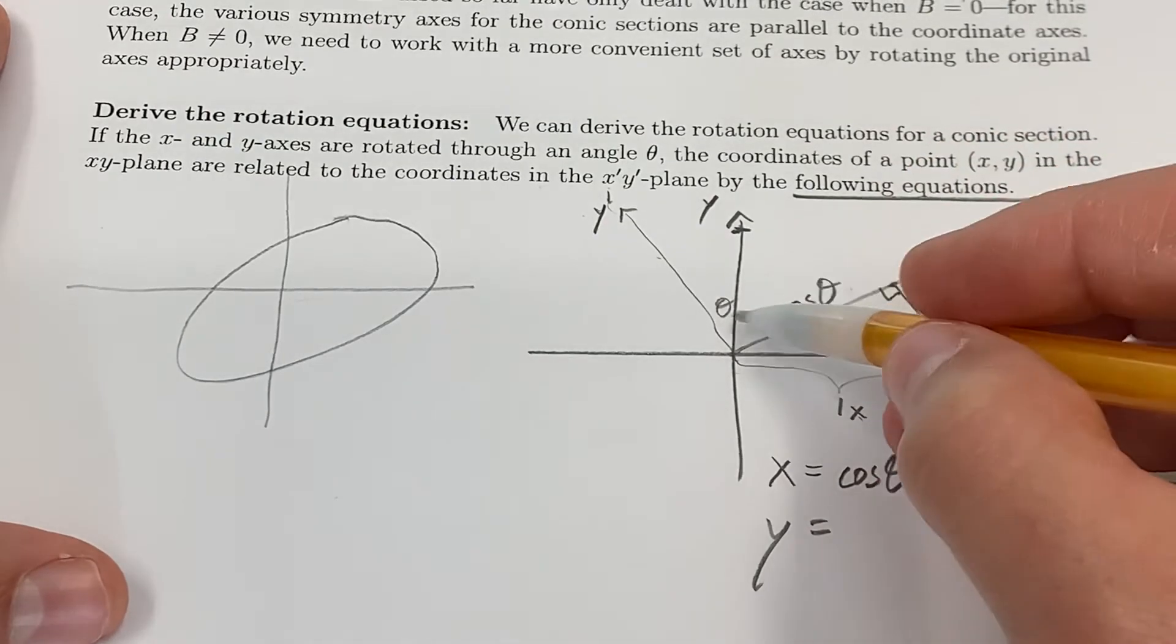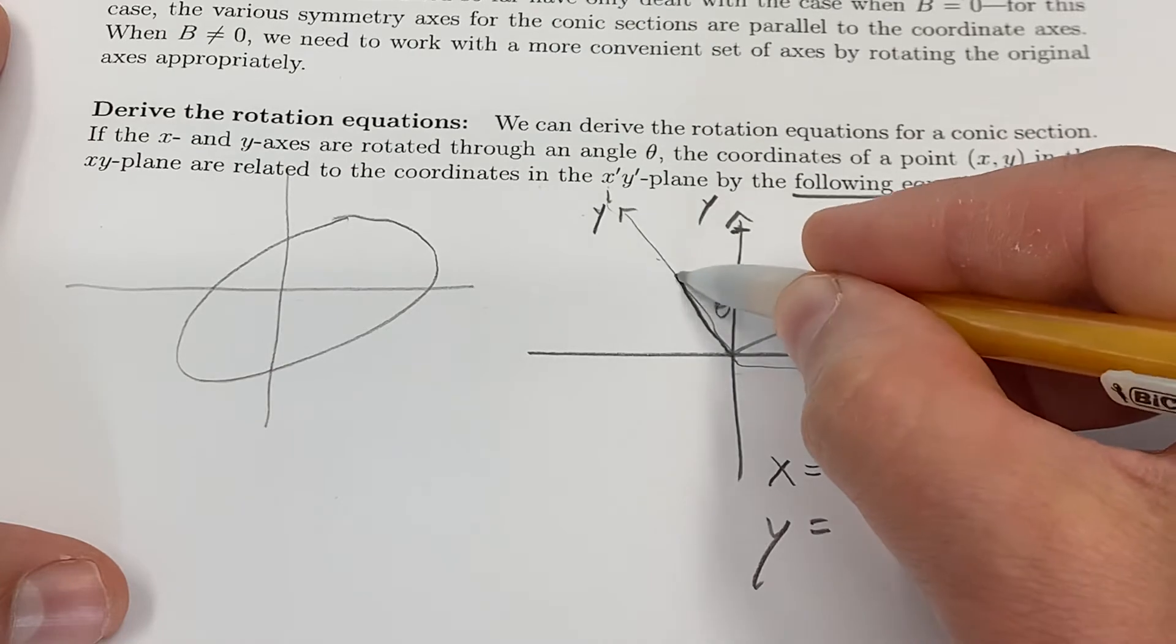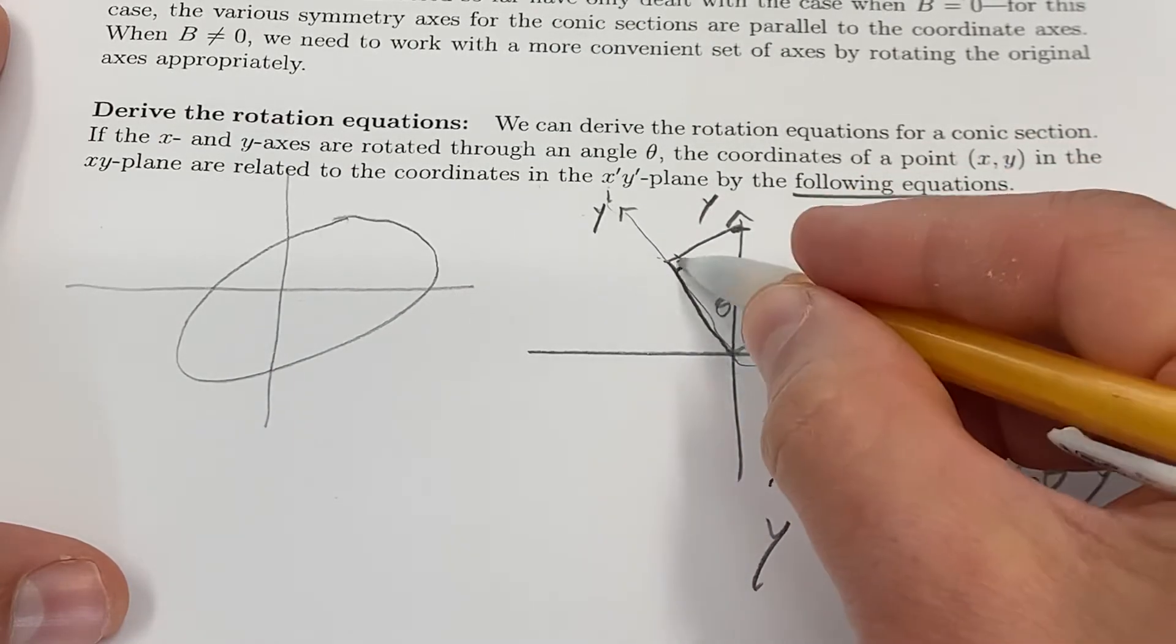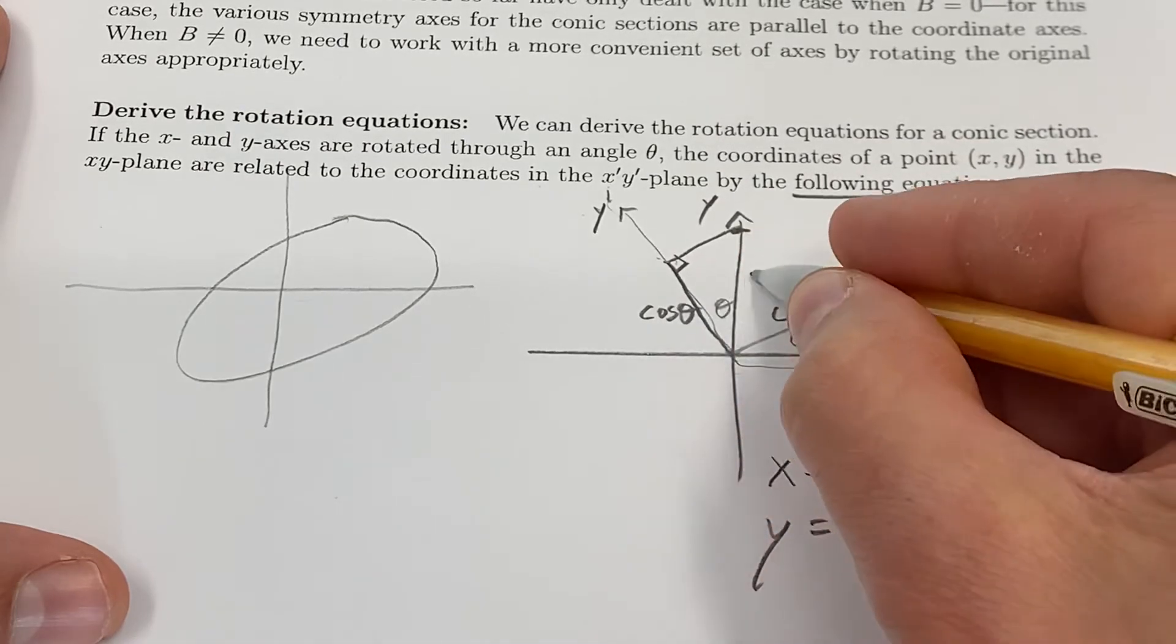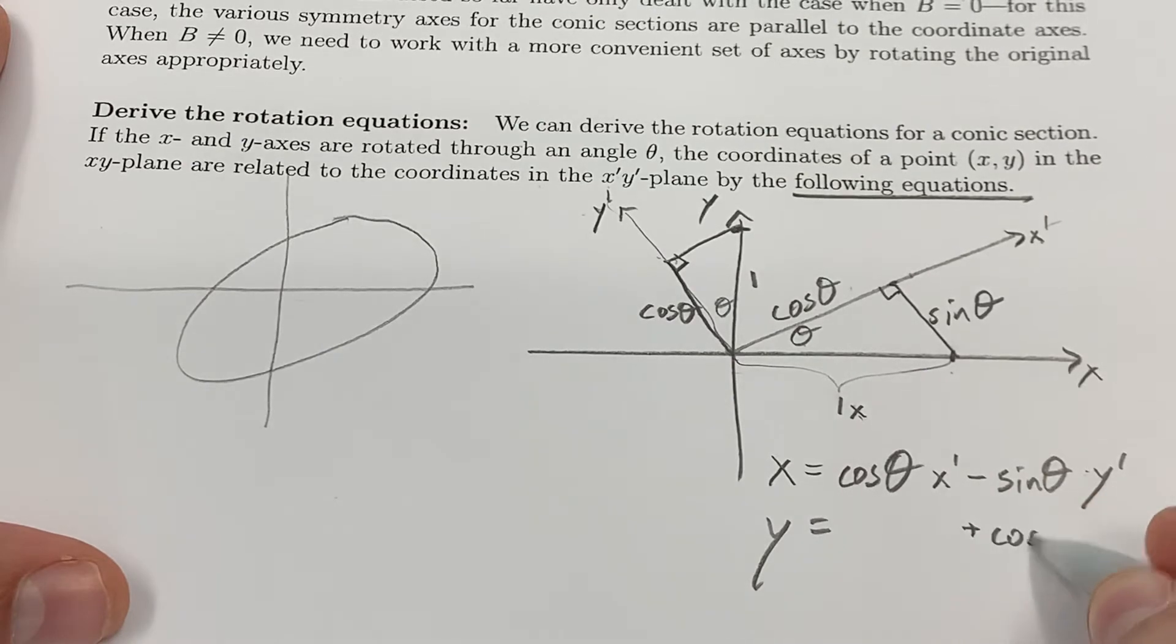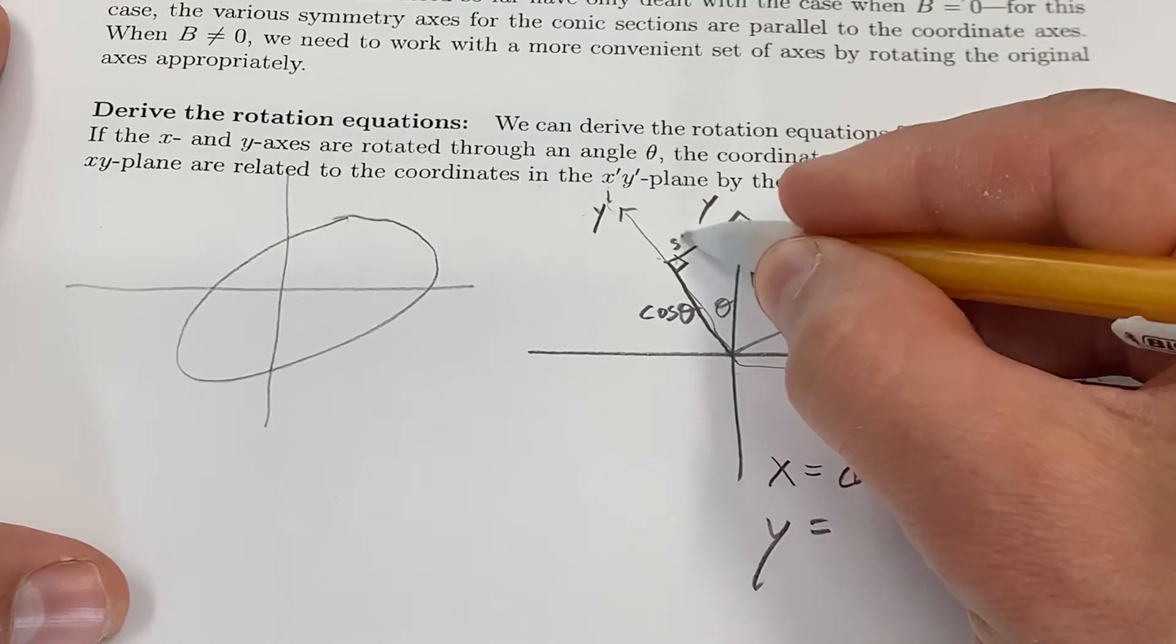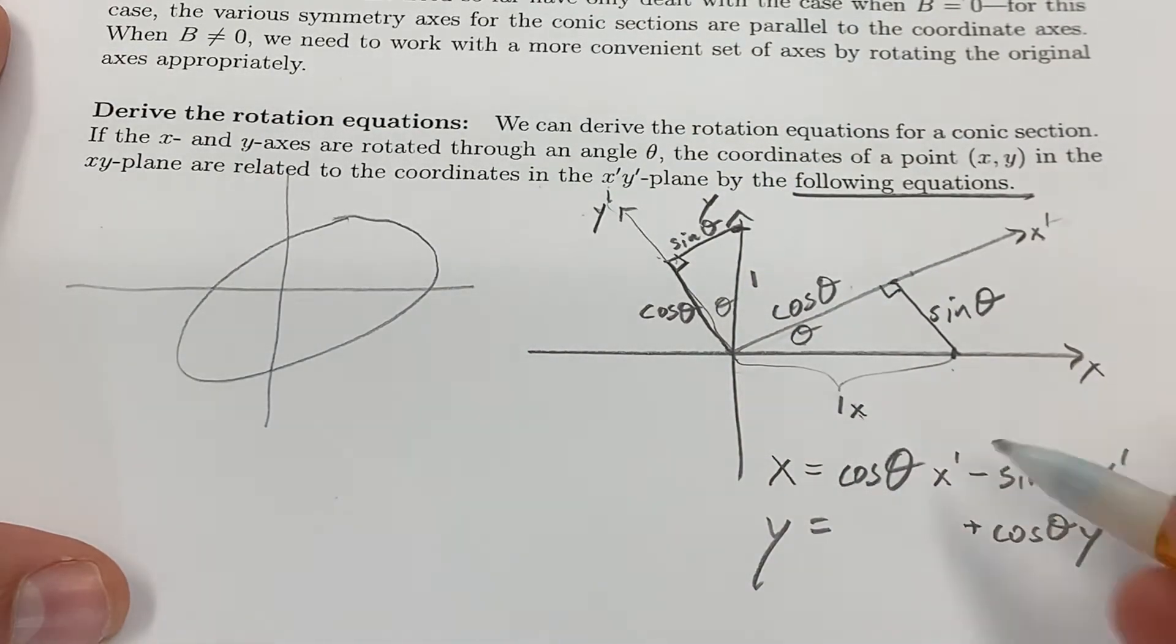Well, that's again the adjacent side with hypotenuse 1, so that's cosine. So I'm going to go cos θ in the y′ direction, and this opposite side is still sin θ. That's how far I go in the x′ direction.